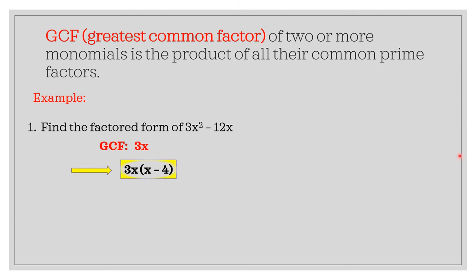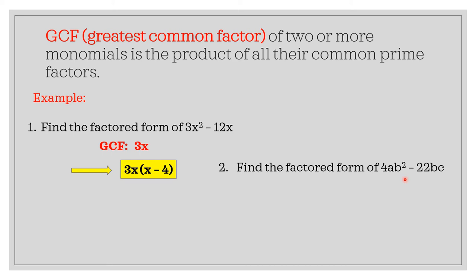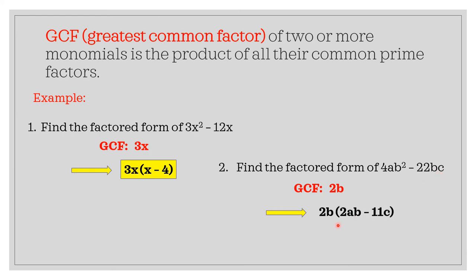Now for the factored form of 4ab squared minus 22bc: for the numerical coefficient, the common factor is 2. For the variable part, ab squared and bc share the common factor b. So our GCF is 2b. Dividing 4ab squared by 2b gives 2ab, and 22bc divided by 2b gives 11c. Therefore, the factored form of 4ab squared minus 22bc is 2b times (2ab minus 11c).